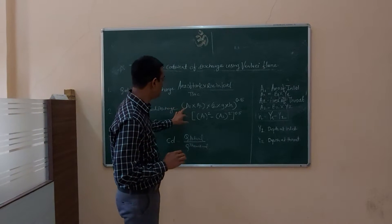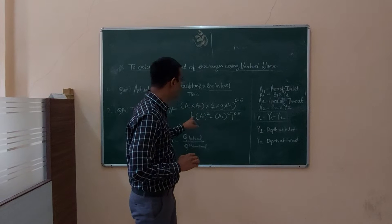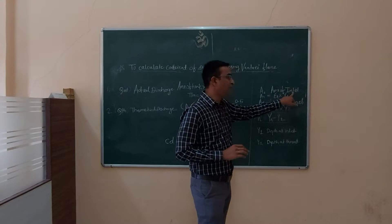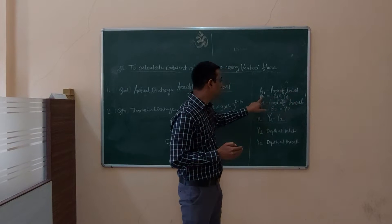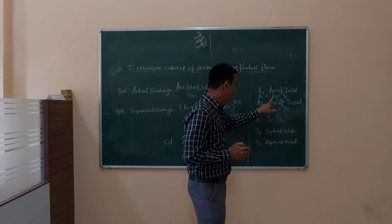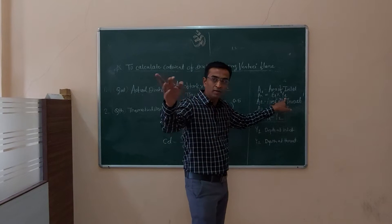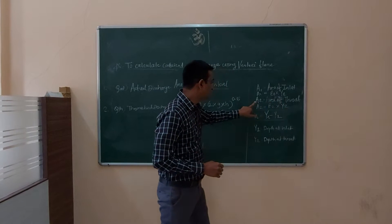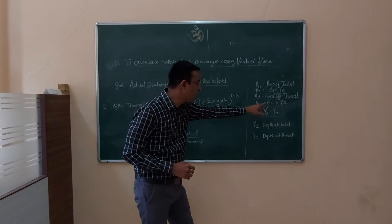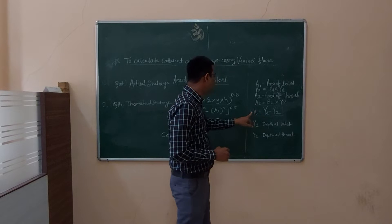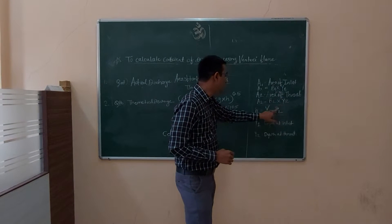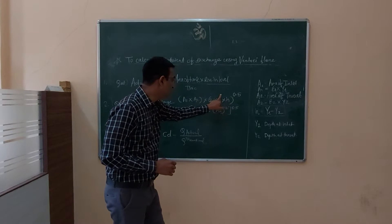I will explain each term in the formula. A1 is the area of the inlet, where A1 equals B1 multiplied by Y1. A2 is the area of the throat, where A2 equals B2 multiplied by Y2. H is the differential head, which equals Y1 minus Y2. These are the terms we are going to use in the formula.